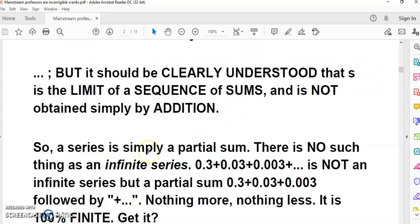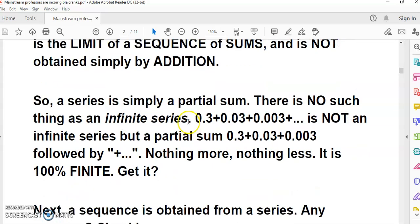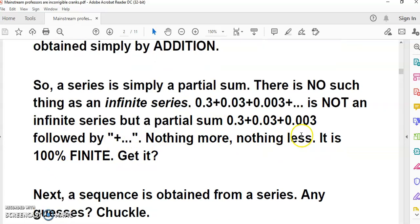So it says that a series is simply a partial sum. There is no such thing as an infinite series. 0.3 + 0.03 + 0.003 + ... is not an infinite series but a partial sum followed by plus and the ellipsis. Nothing more, nothing less. All you ever have is a partial sum followed by the ellipsis.